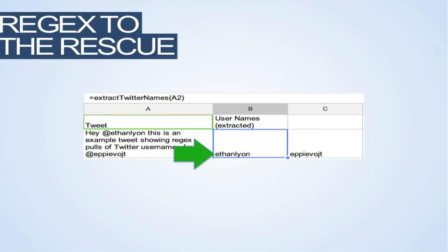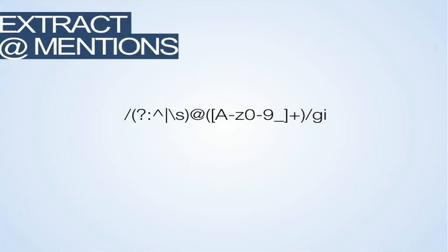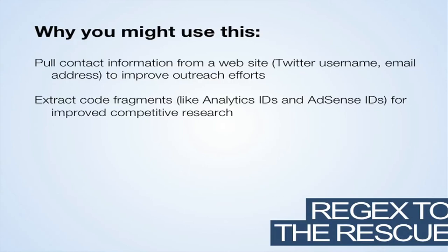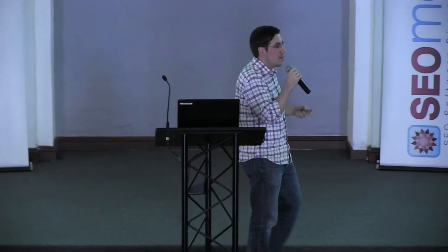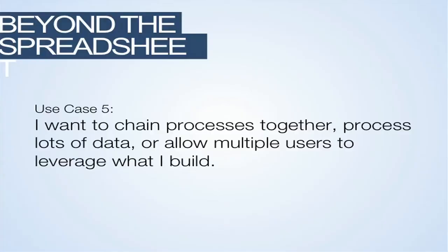Here's what that regular expression looks like — just trust me on this. That's going to pull only Twitter names and it's not going to grab email addresses. Why would you use this? You can use it to pull contact information from anything that's very structured data — an at sign and then some letters. Some letters, an at sign, some letters, a dot, some letters — that's an email address. Phone numbers are structured, even addresses are structured. There's a lot of stuff we can pull there.